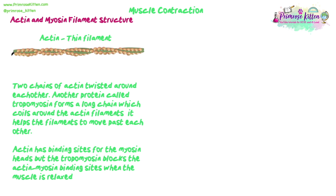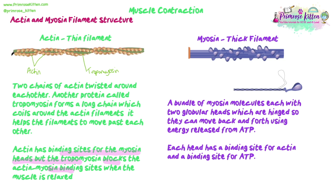The actin, or thin filament, is made up of two chains of actin protein twisted around each other. Another protein called tropomyosin forms a long chain that coils around the actin filaments and helps the filaments move past each other. The actin has binding sites for the myosin heads, but when the muscle is relaxed, the tropomyosin is blocking those binding sites. So for muscle contraction to occur, we need to move the tropomyosin away to free those binding sites so the myosin can bind to the actin.